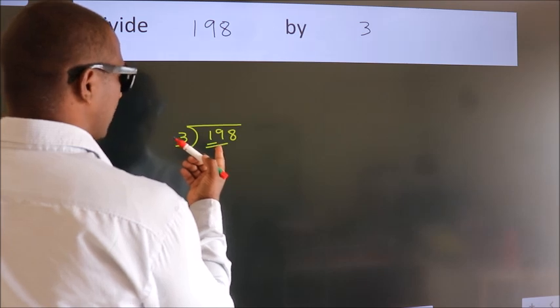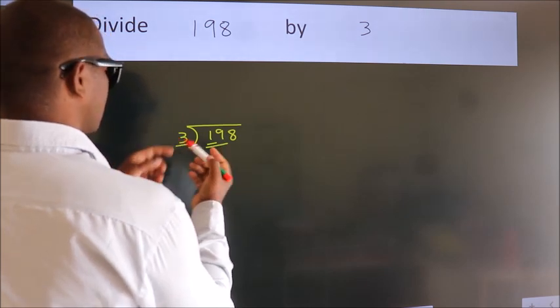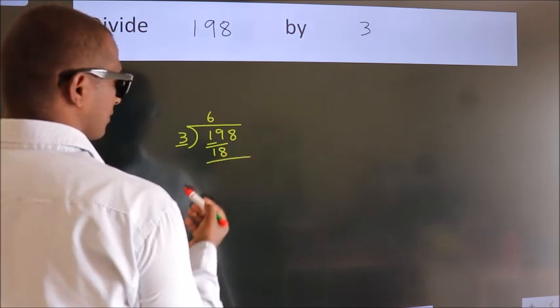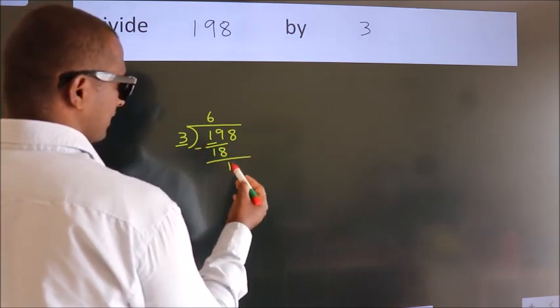A number close to 19 in 3 table is 3, 6, 18. Now we should subtract. We get 1.